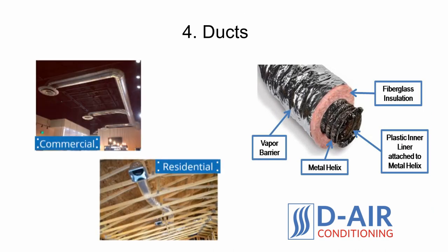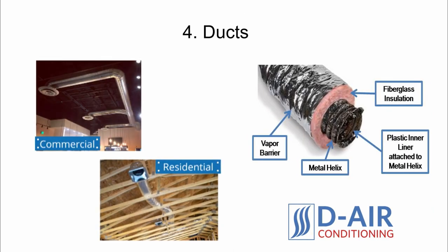4. Ducts. Your duct system is the delivery mechanism for the central air and central heating system. The ducts send the hot or cold air across your home into individual rooms. The most common type of duct system in a residential project is the flexible duct with a metal helix. The ducts are reinforced with fiberglass insulation and a vapor barrier keeps the hot or cool air from escaping.